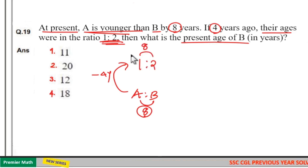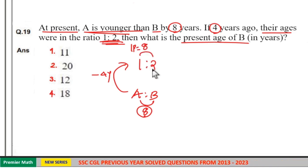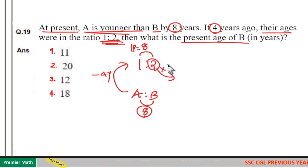Now ratio difference is 2 minus 1, which is 1 part. So 1 part as 8 means 2 parts is equal to 2 into 8, which is 16. That is, 4 years ago B's age was 16.